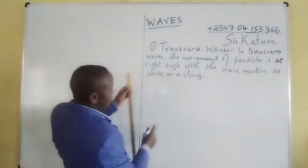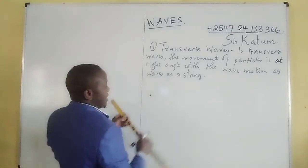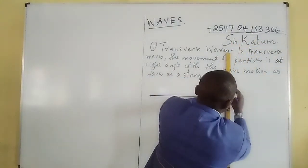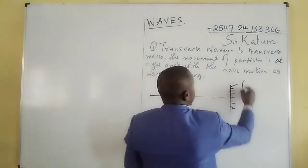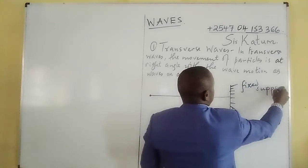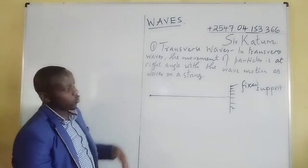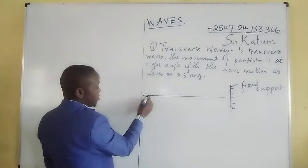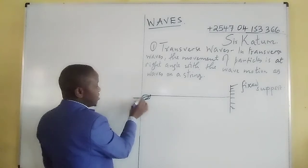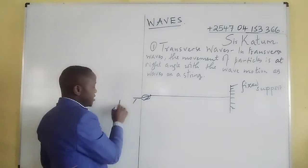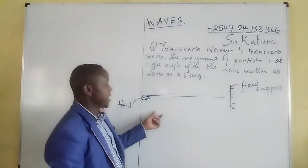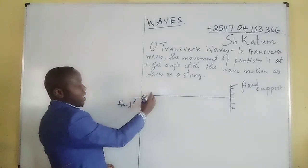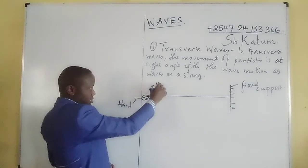Let's take the example of waves on a string. When a string is held at one end fixed to a support, we have the other end held by a hand. So we have a fixed support here, with a string tied to it, and a hand holding the other end. The string is then vibrated from this end upwards and downwards.